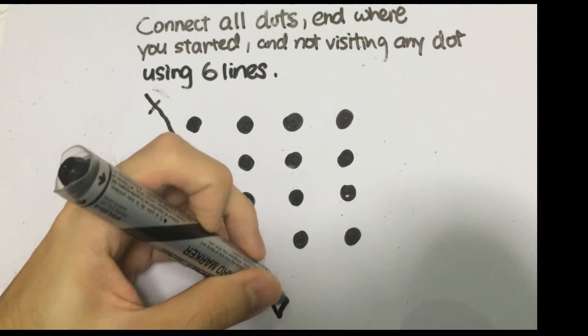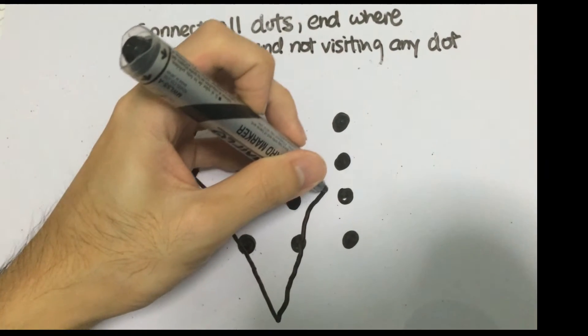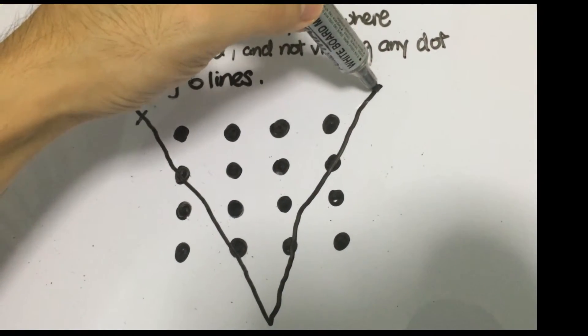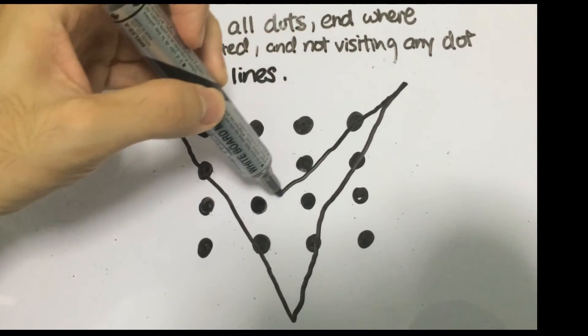followed by going through this dot and this dot, after which I'm going to draw this line down. This is the third line now.